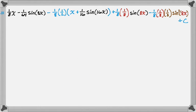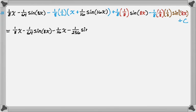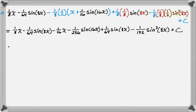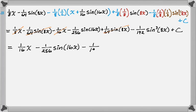Now I simplify. Collecting like terms: the x-terms are (1/8)x and −(1/16)x, which combine to (1/16)x. The sin(8x) terms — −(1/64)sin(8x) and +(1/64)sin(8x) — cancel out. The sin(16x) term has nothing to combine with, so it stays. Likewise, the sin³(8x) term stays.